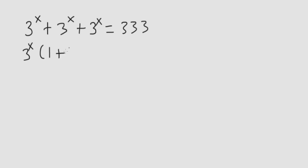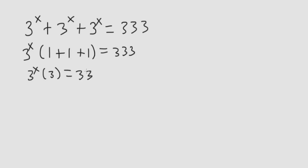We have 3 to the x times 1 plus 1 plus 1 is equal to 333. So 3 to the x times 3 is equal to 333. Divide each side by 3 and we get that 3 to the x is equal to 111.